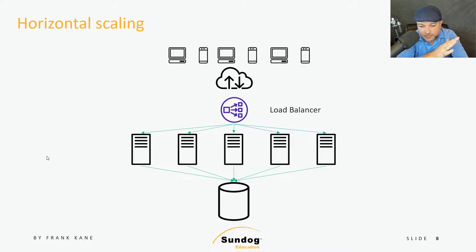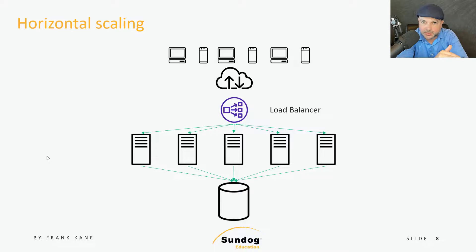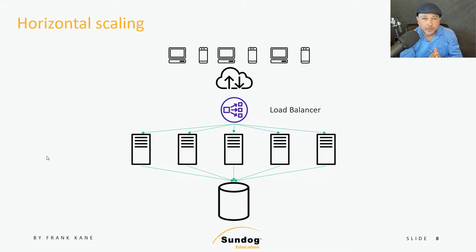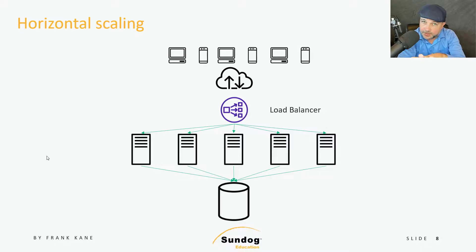There are finer points about geographic location and what data centers to use — we'll get into that. But the basic idea is that horizontal scaling allows practically infinite scaling: the more servers you throw in, the more traffic you can handle. There's really no bound to it. The downside, of course, is that there's more stuff to maintain.